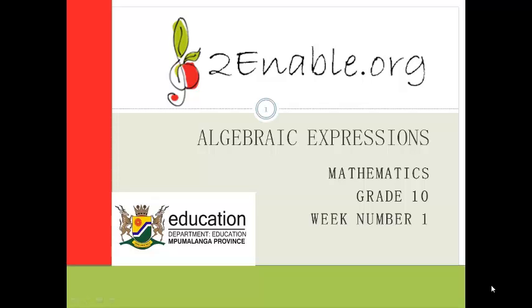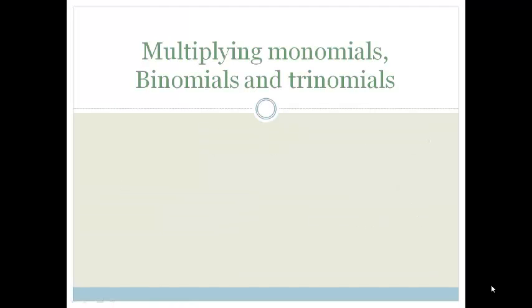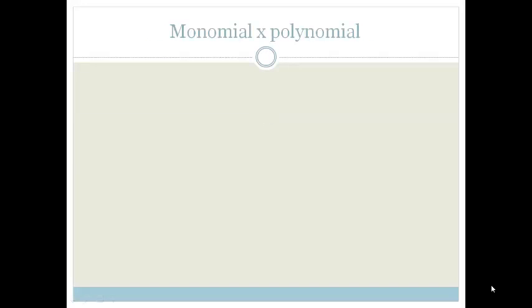Good day, grade 10s. In this last lesson in week 1 of Algebraic Expressions, we're going to be learning about multiplying monomials, binomials, and trinomials. A monomial is a mathematical expression with one variable, binomials have two variables, and trinomials have three. So a polynomial means three or more.